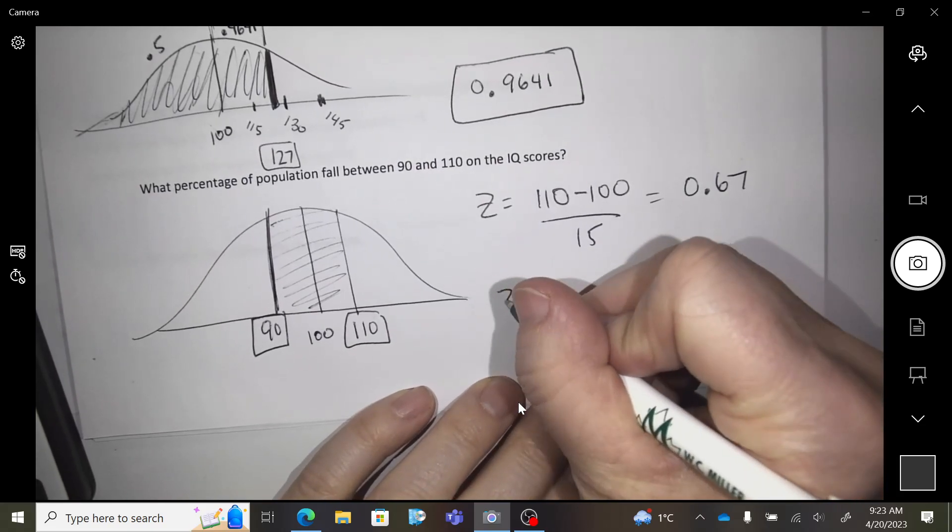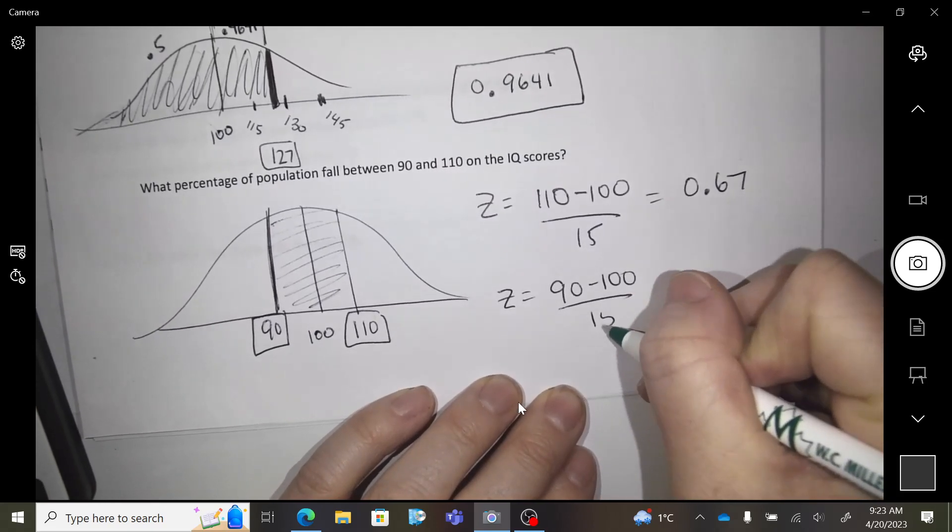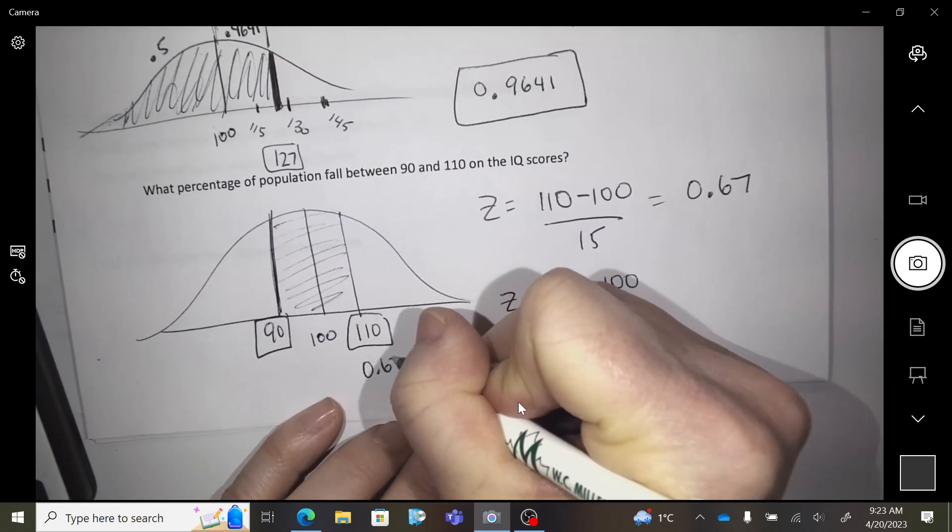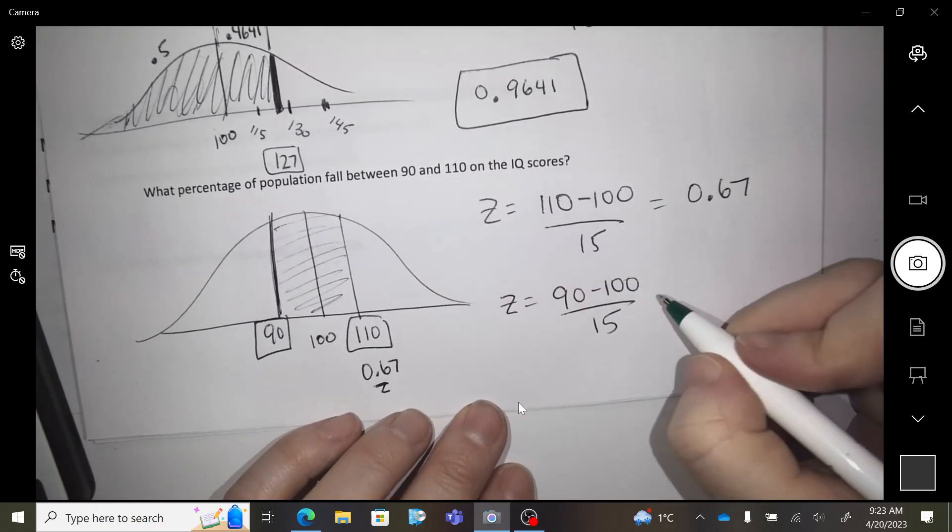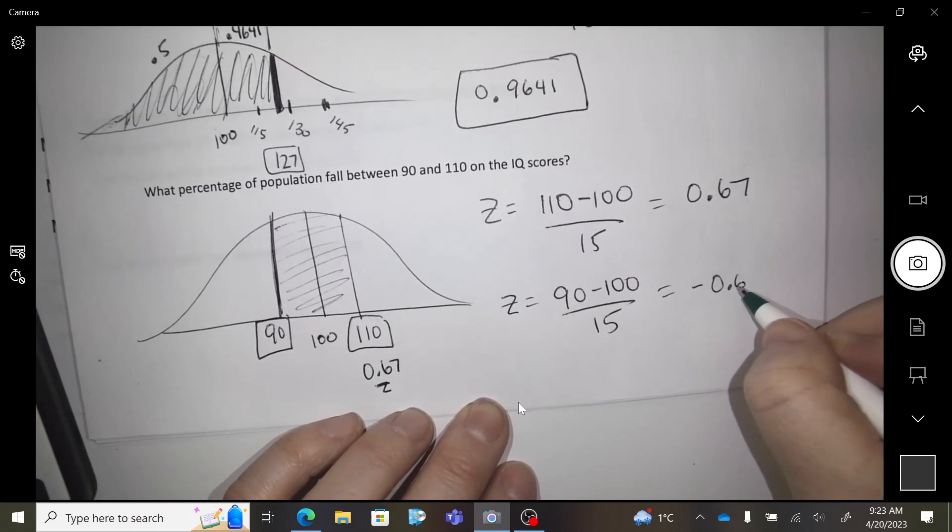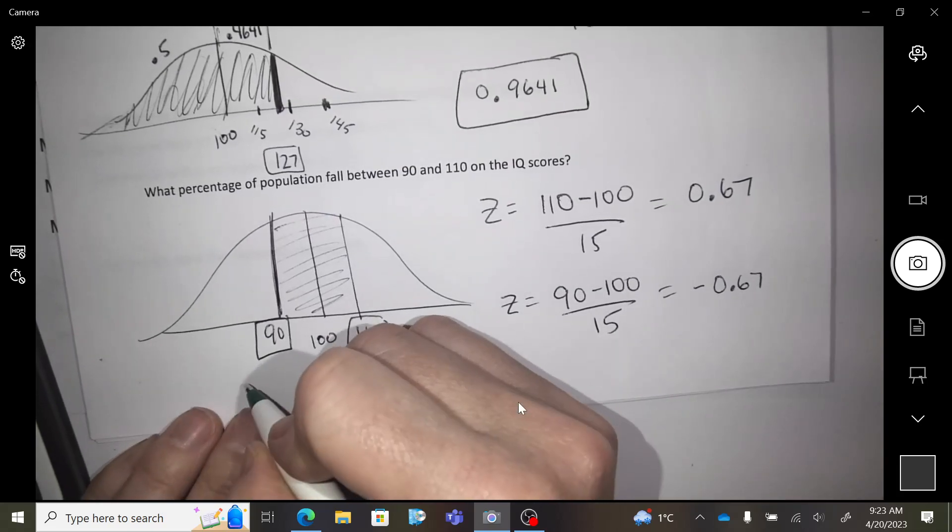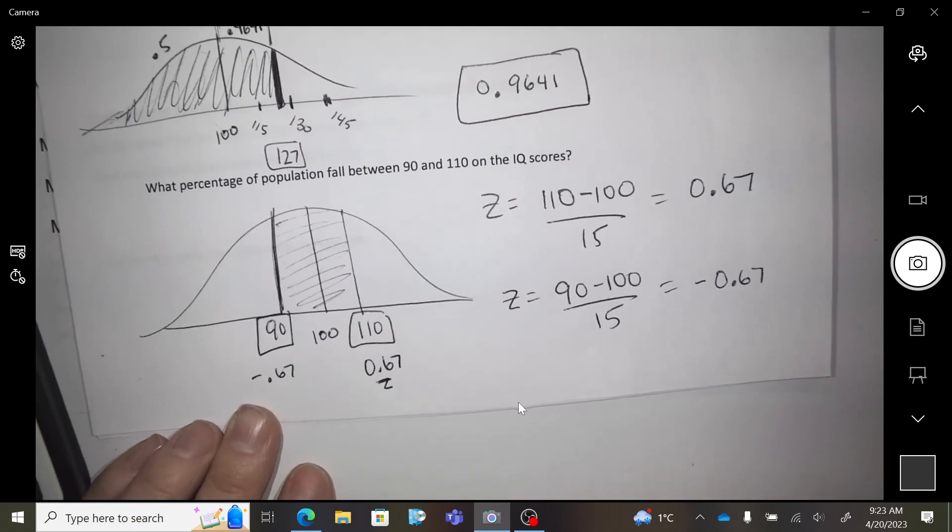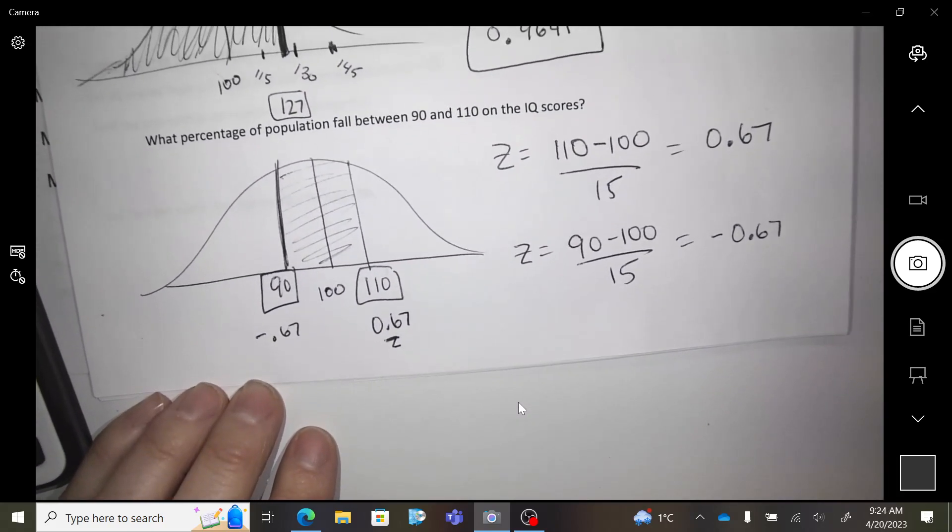So I'm getting a 0.67. I'm also going to find the z-score of 90, and I get negative 0.67, right? Does that make sense to you? Because you're below the average, you have a negative z-score.